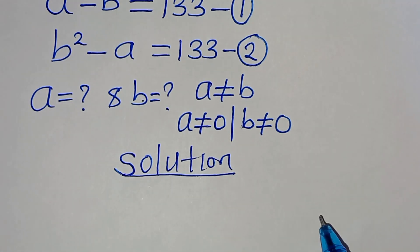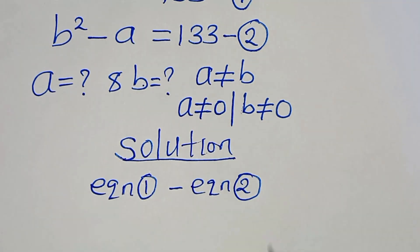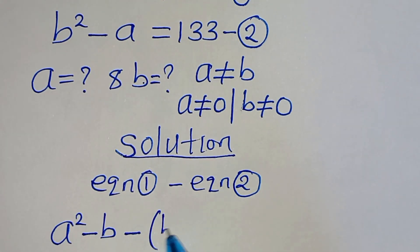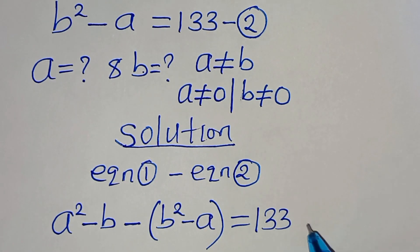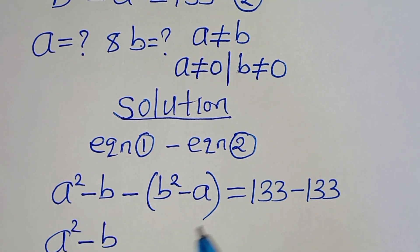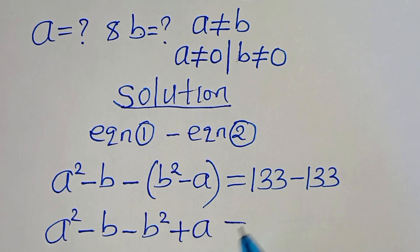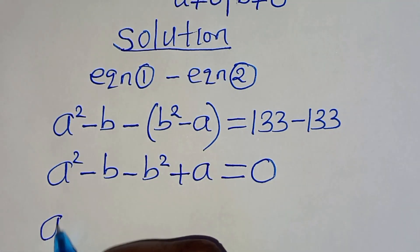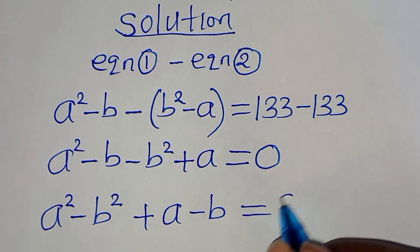The first step is to subtract equation 1 with equation 2. This implies that a squared minus b, subtract b squared minus a, equals 133 subtract 133. Opening the parentheses: a squared minus b squared, then minus b, plus a, equals 133 minus 133, which equals 0. So we have a squared minus b squared plus a minus b equals 0.